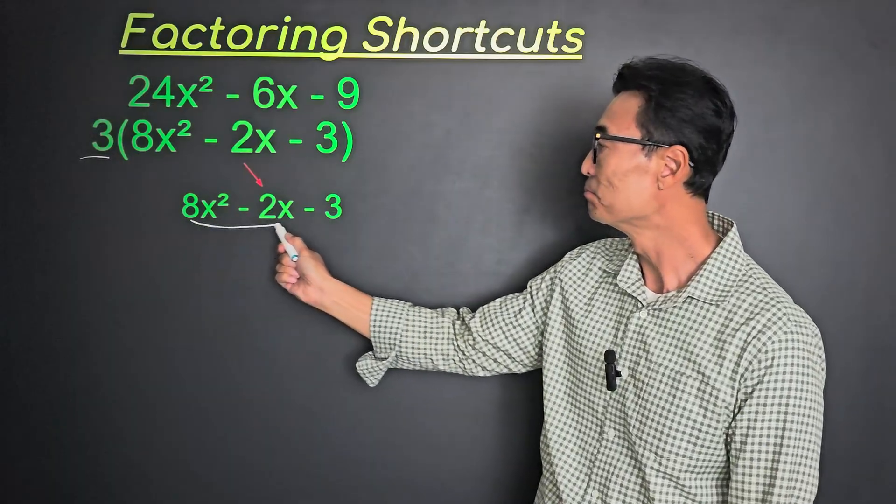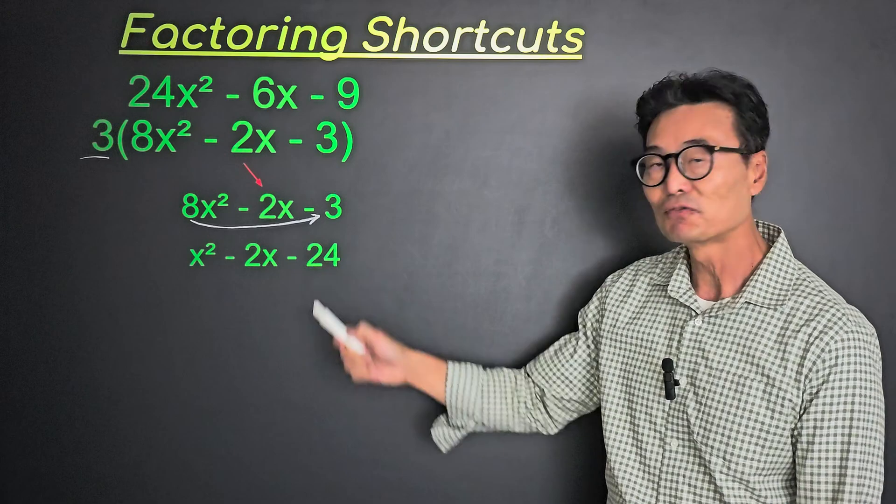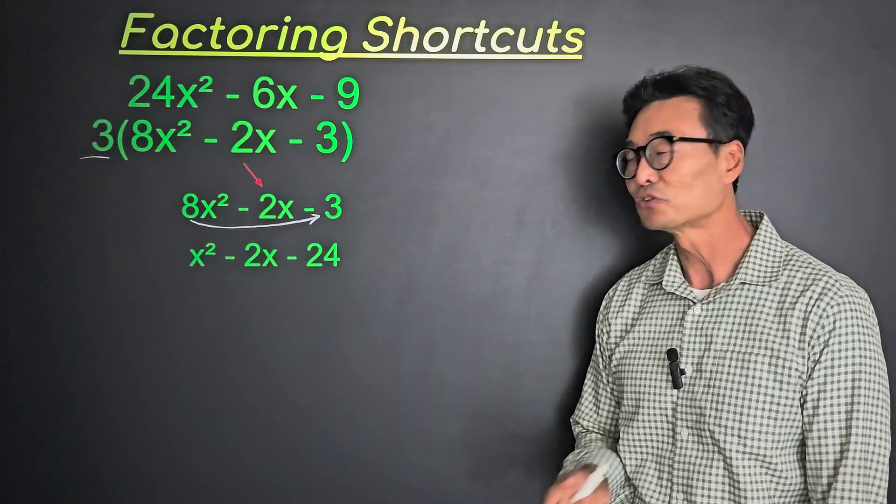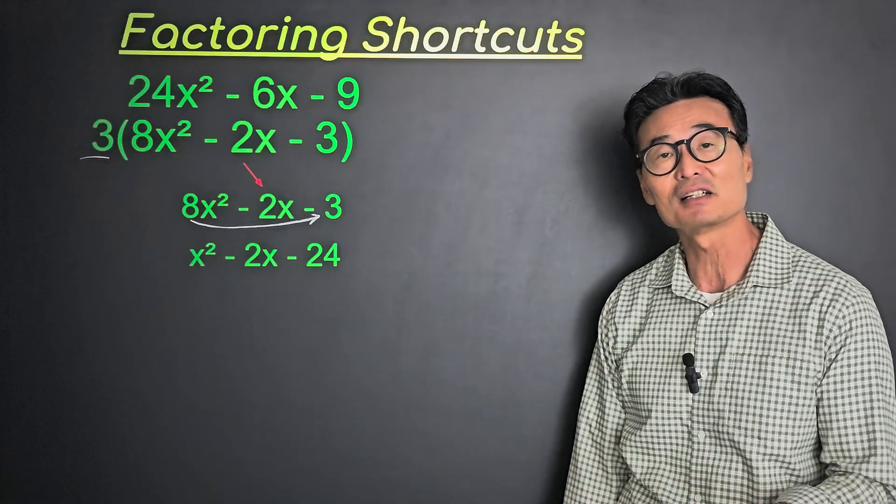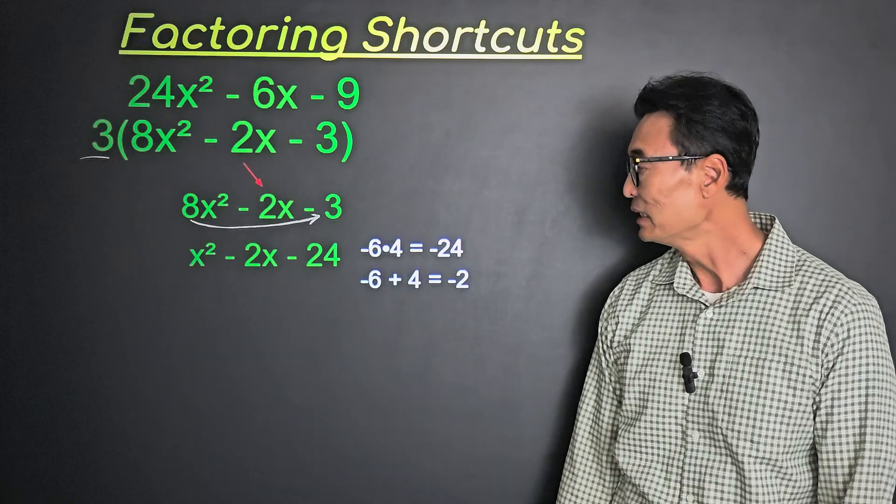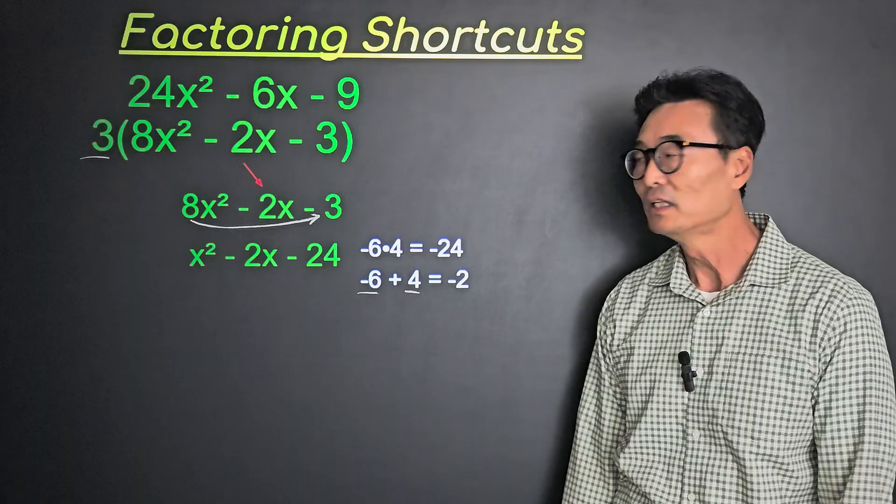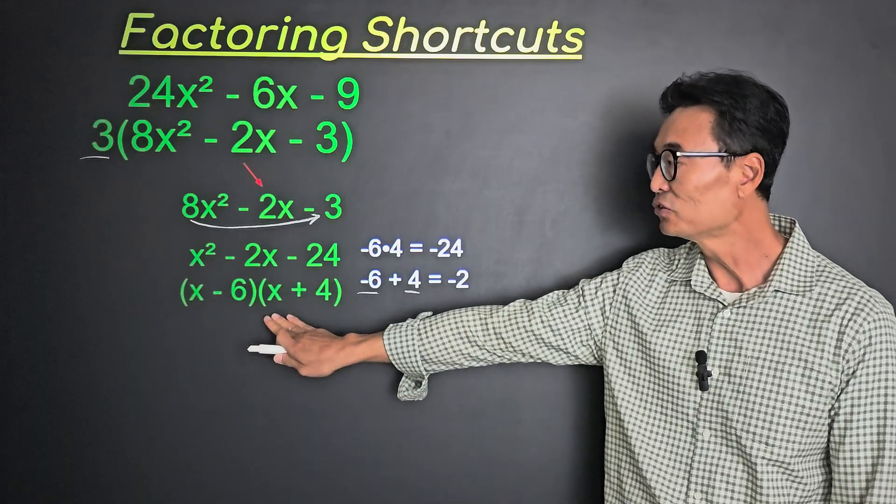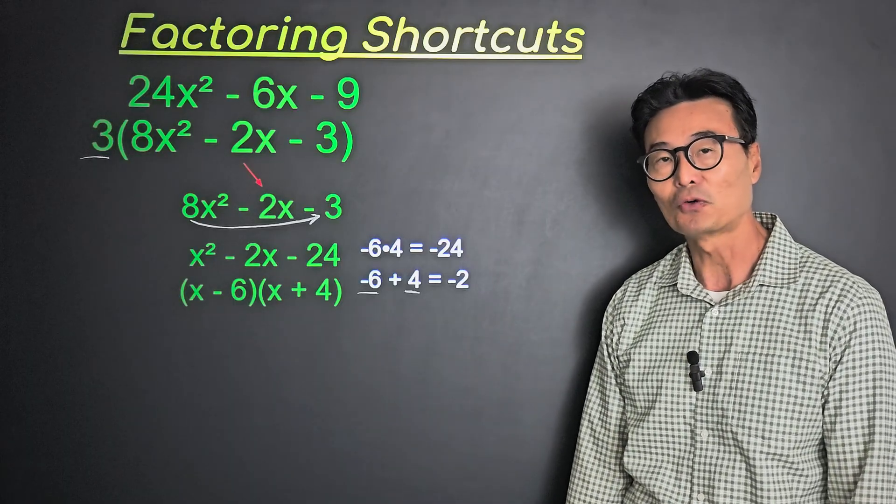First, we'll take the 8, multiply to the 3, which gives us that 24, and we want to look for two numbers that multiply to negative 24 and at the same time give us the sum of negative 2. And those two numbers are negative 6 and 4. So we want to go ahead and factor x² - 2x - 24 into x - 6 times x + 4.